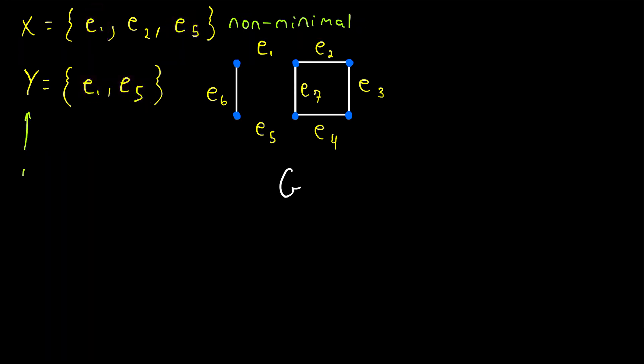Then our edge cut Y is a minimal edge cut. It's minimal because it does not contain edges that make up a smaller edge cut. There is no edge cut that's a proper subset of Y. Deleting just E1 would not have disconnected the graph, and deleting just E5 would also not have disconnected the graph. So Y is a minimal edge cut.